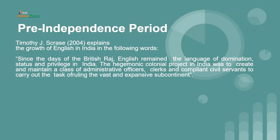A medium was taking place and this medium was occurring in the form of English language. As Timothy J. Scratch in 2004 explains the growth of English in India: since the days of the British Raj, India remained the language of domination. It was mainly used to dominate the Indians and their status and privilege. The hegemonic colonial project in India was to create and maintain a class of administrative officers, clerks and compliant civil servants to carry out the task of ruling the vast and expensive subcontinent.